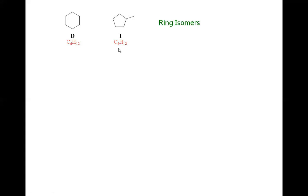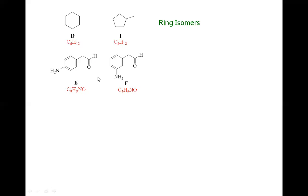For the pair E and F: their molecular formulas match, confirming they are isomers. However, the amino group is at one position in compound E and at a different position in compound F. The rest of the structure remains the same. Therefore these two are positional isomers, also called regio-isomers — isomers in which the position of a substituent varies.